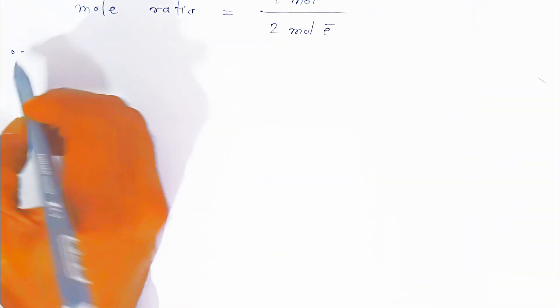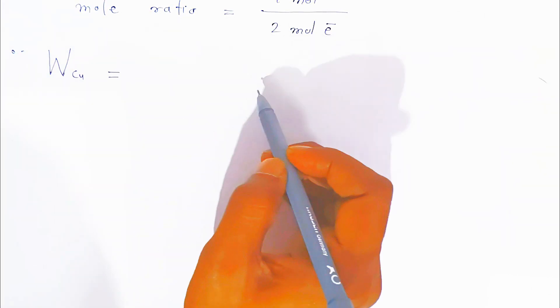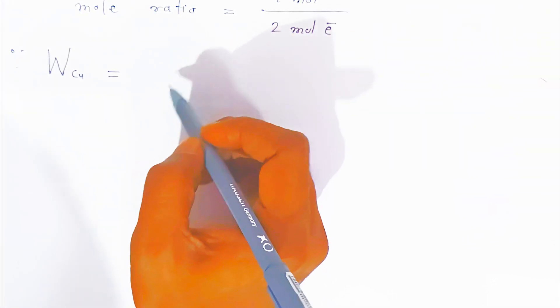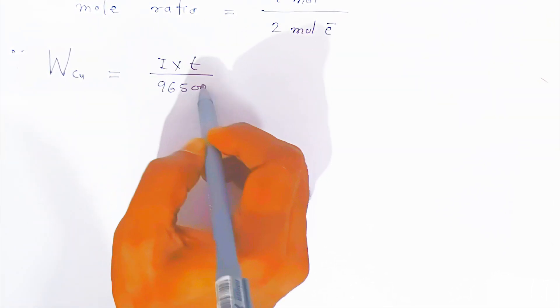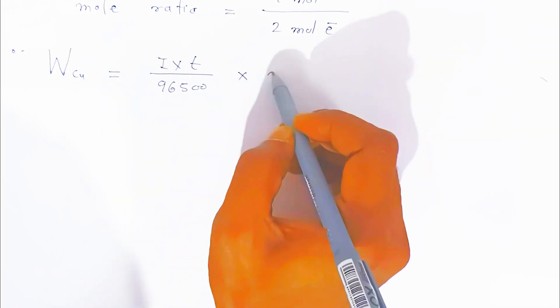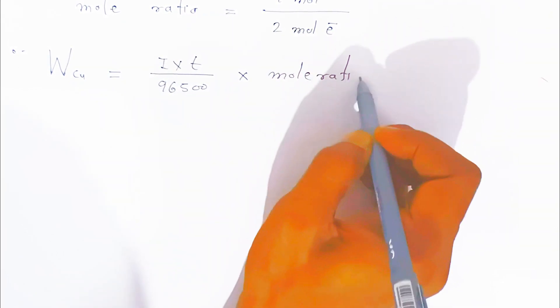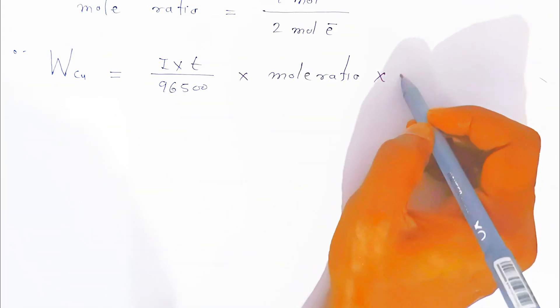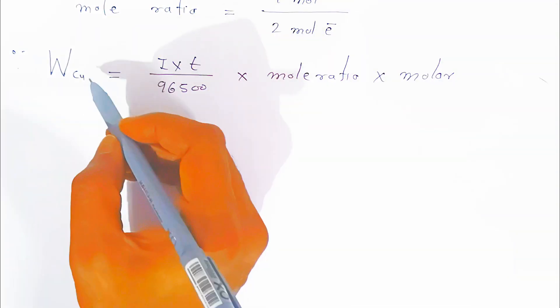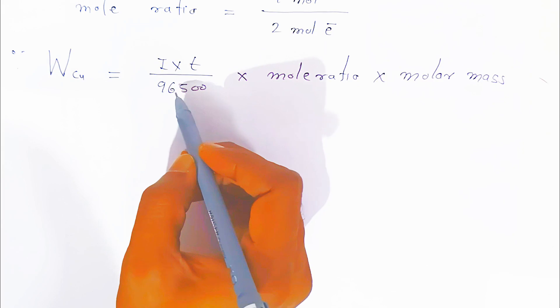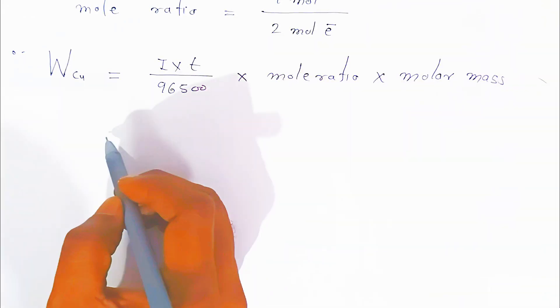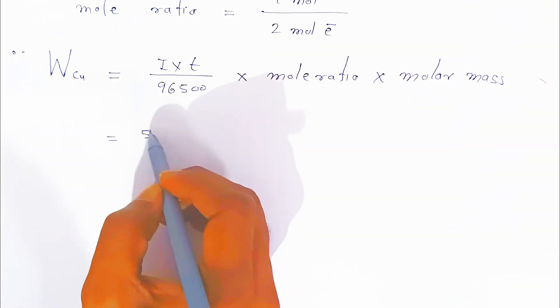The weight of copper deposited is: current × time divided by 96500 (which gives moles of electrons), multiplied by the mole ratio, multiplied by the molar mass. Since it is copper, you take only the molar mass of copper.